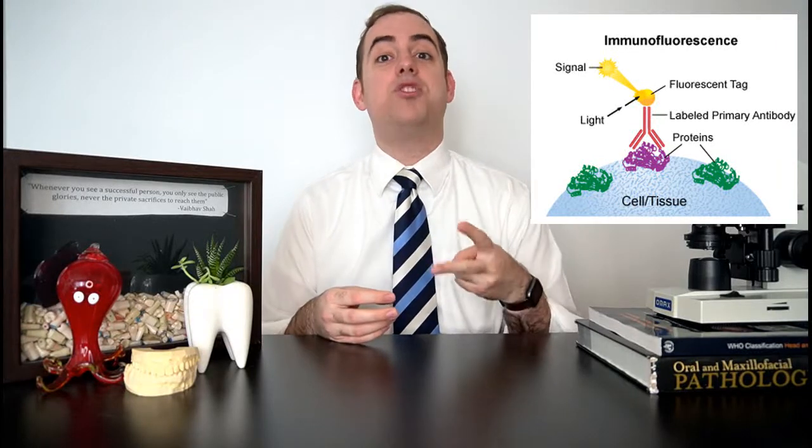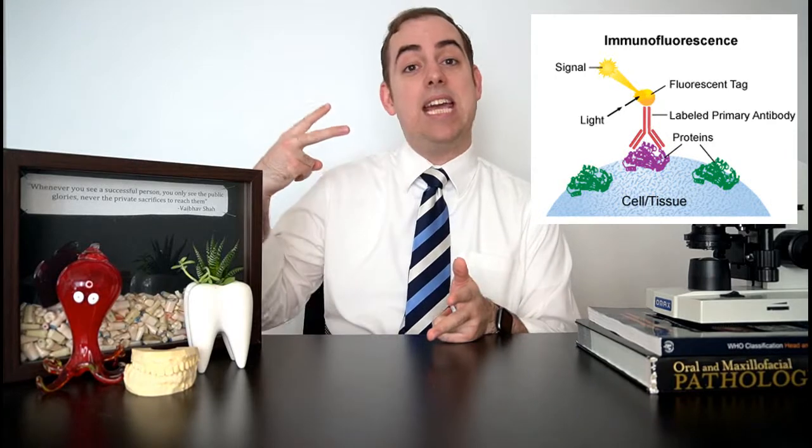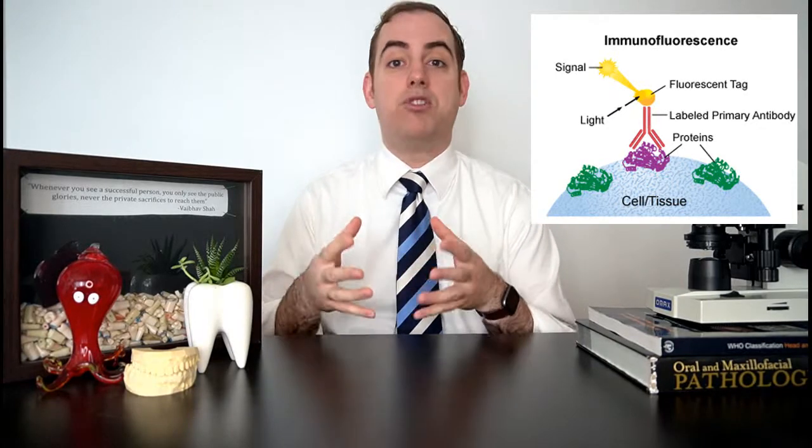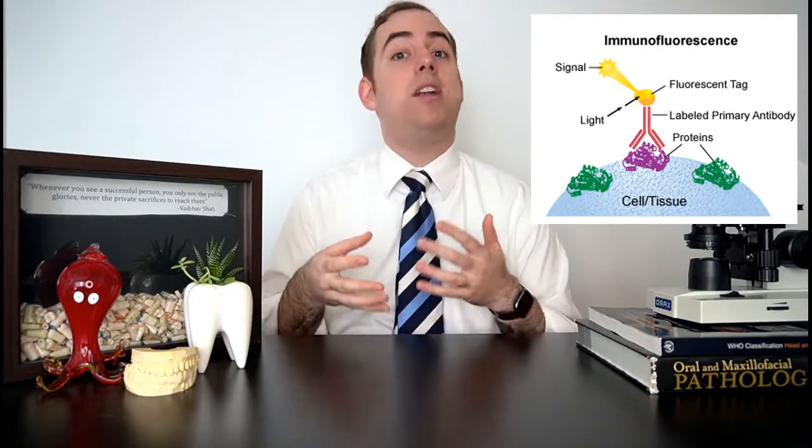A variant on IHC is direct immunofluorescence, or DIF, which is reserved for certain autoimmune conditions that affect the epithelium — most commonly pemphigoid and pemphigus. In these conditions, the patient's own body is producing antibodies that are wrongfully attacking the surface of their epithelium. To diagnose it, we have to figure out exactly where these antibodies are attacking the body. Similar to IHC, the initial antibody is created by the patient's own immune system; we then apply a labeled antibody that lights up under a special microscope to see which of the patient's antibodies are attached to what structures.